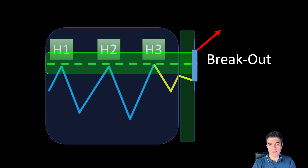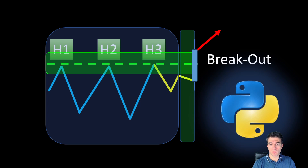The width of the zone is one parameter of our algorithm that we can adjust and study in different scenarios. Whenever the setup is detected, we wait for one more candle to break and close above or below the key zone edges, and so we generate our bullish or bearish signal depending on the direction of the trend.